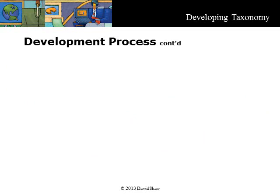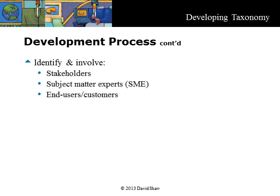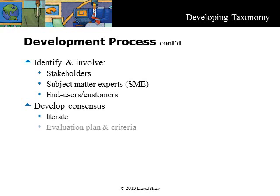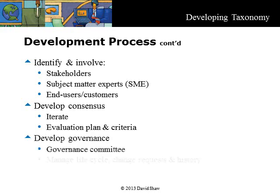The process of developing a taxonomy begins by identifying and involving stakeholders, subject matter experts, and end users or customers. Develop a consensus through iteration and develop an evaluation plan and criteria for acceptance. Develop a governance framework and decide how to manage the lifecycle, change requests, and change history.